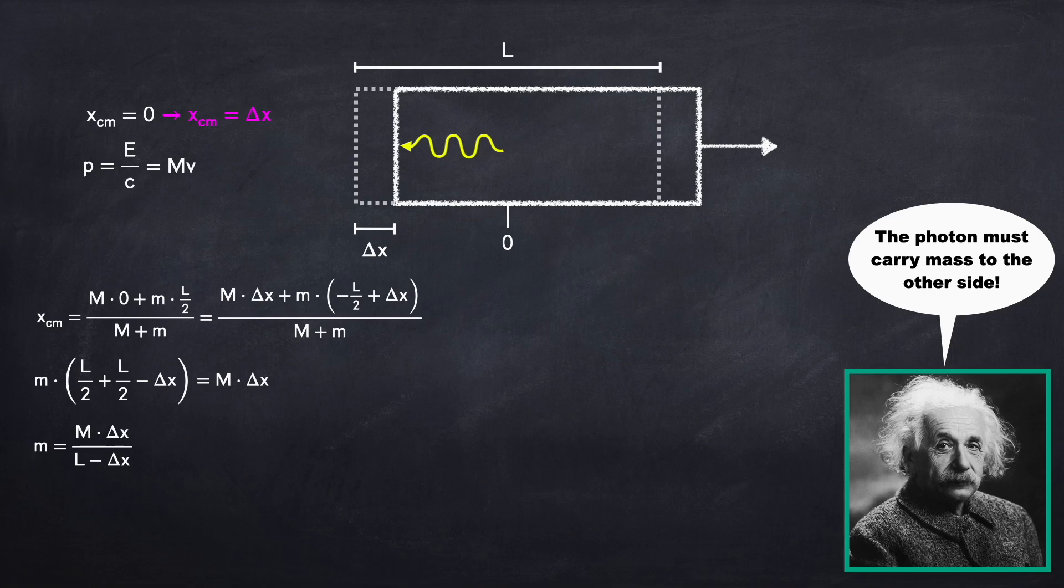So now we have to figure out what delta x is. How far did this box shift over? Delta x, which is the change in position, will be equal to the velocity times time. Well the velocity is equal to the momentum divided by the mass. So we can substitute that in.